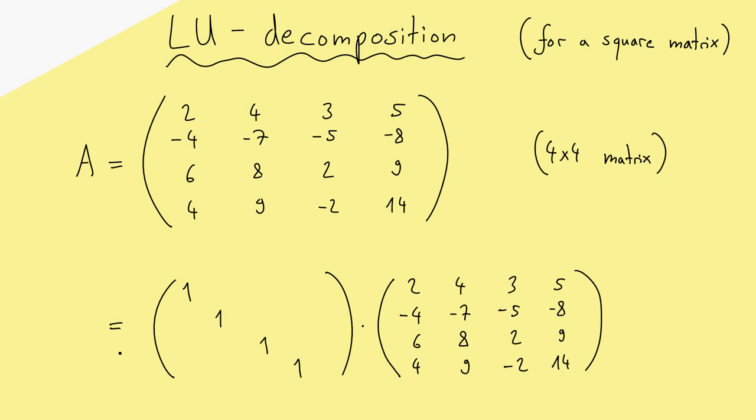Obviously the equality still holds because we just multiplied the identity matrix. And now you see we almost have our LU decomposition here. We will transform the identity matrix into a lower triangular matrix. So we will fill in numbers here, but not here. And we will transform this one to an upper triangular matrix. This means that we now just use the normal Gaussian elimination on the right, but now we also memorize all the steps with the help of the matrix on the left.